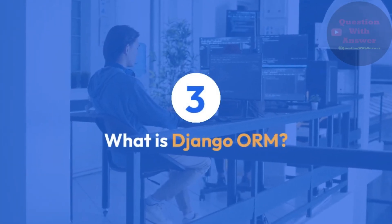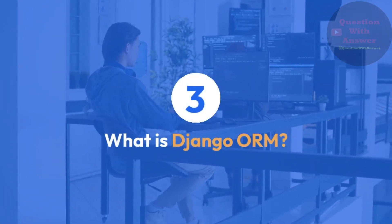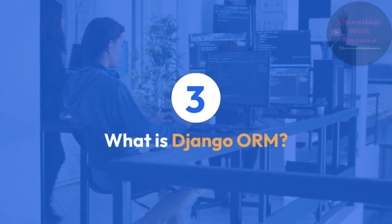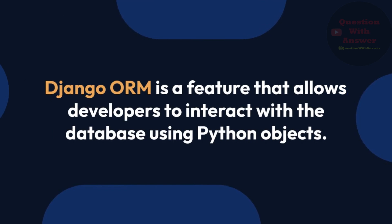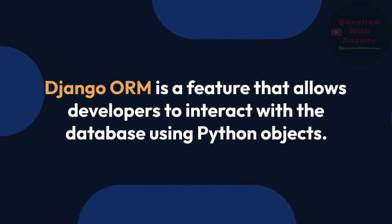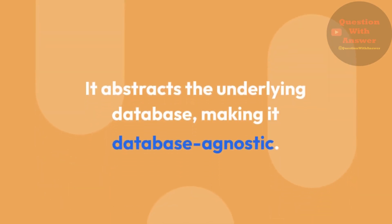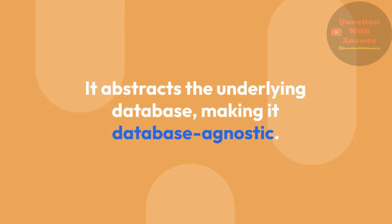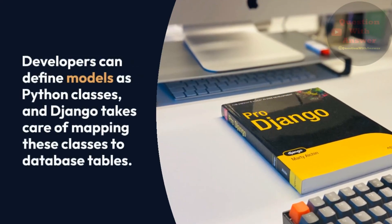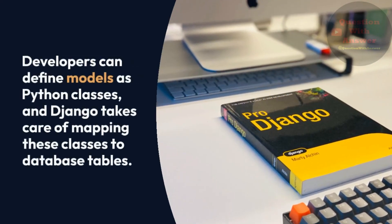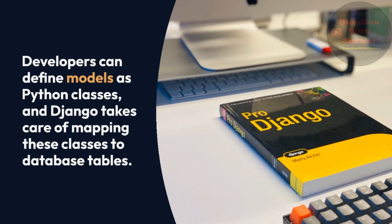Question 3: What is Django ORM? Answer: Django ORM is a feature that allows developers to interact with the database using Python objects. It abstracts the underlying database, making it database-agnostic. Developers can define models as Python classes, and Django takes care of mapping these classes to database tables.